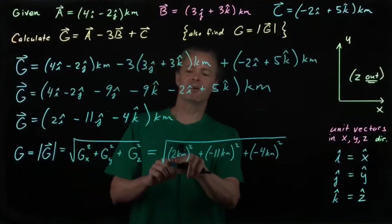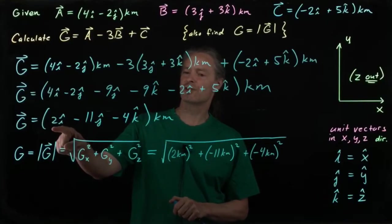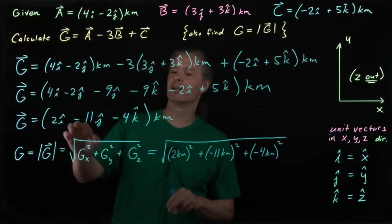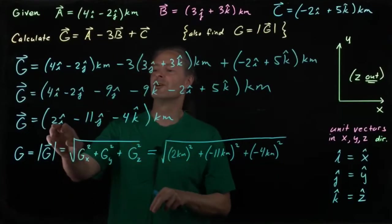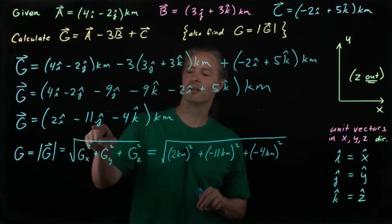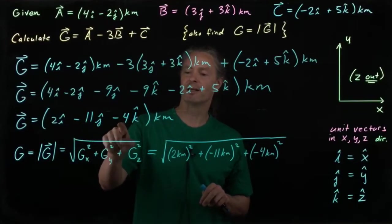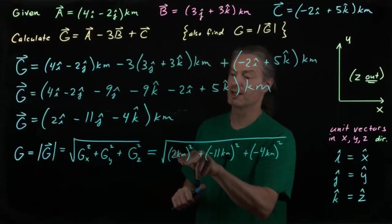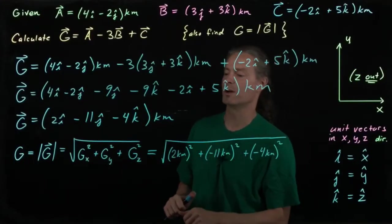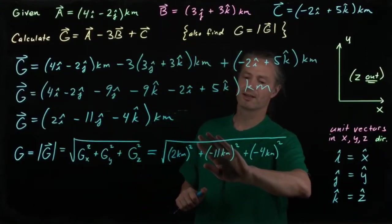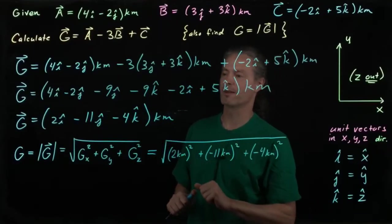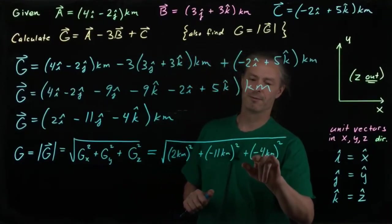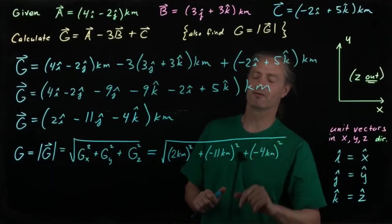The x component of vector g isn't just the 2. Really, it's the 2 kilometers. All right, so really, if I distribute this in, I have 2 kilometers i-hat, minus 11 kilometers j-hat, minus 4 kilometers k-hat. All right, so it's the 2 kilometers that ends up here. That's g sub x, I've got to square that. The minus 11 kilometers, that's the y component, I've got to square that. And then the minus 4 kilometers, that's the z component of g, and I've got to square that.